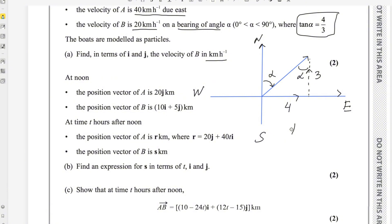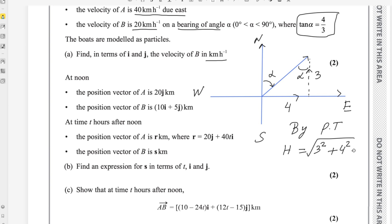By the Pythagorean theorem, we can find the hypotenuse of this triangle. Hypotenuse squared equals adjacent squared plus opposite squared, so it is 3 squared plus 4 squared. That is 9 plus 16, which gives 25, and the square root of 25 is 5. So the hypotenuse of this triangle is 5.